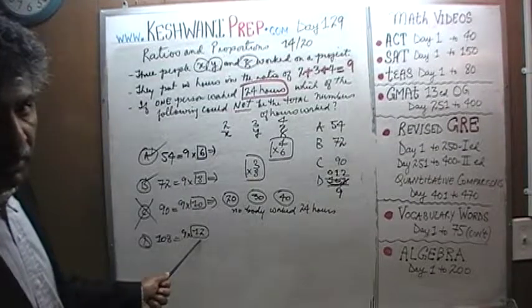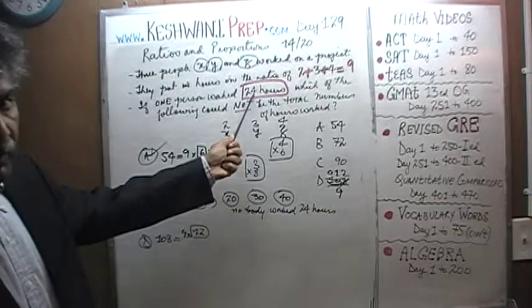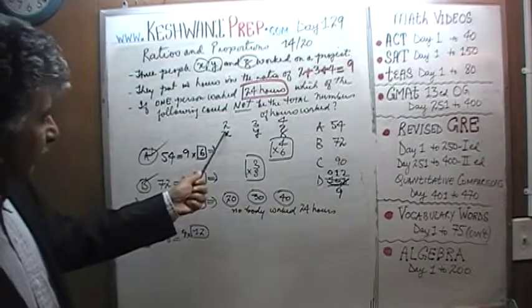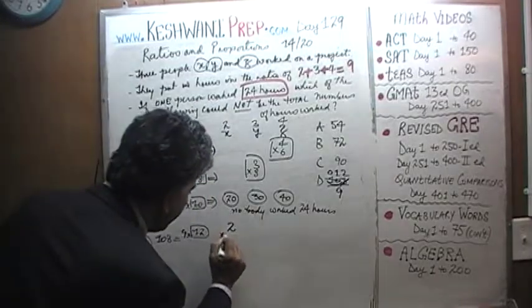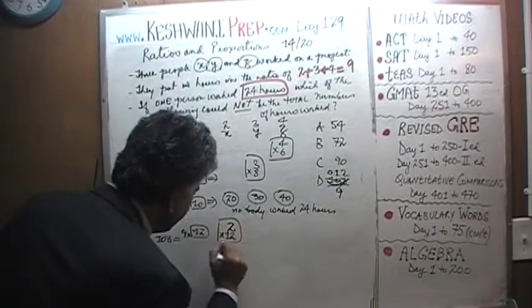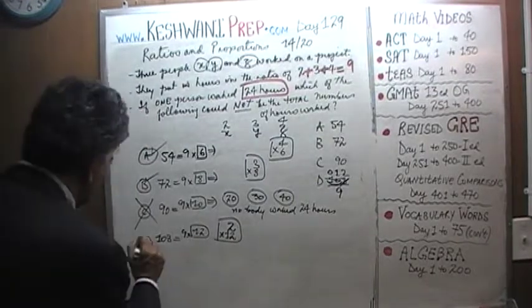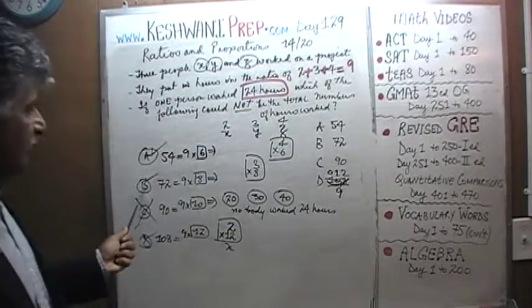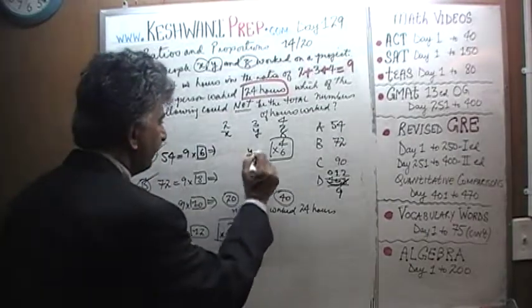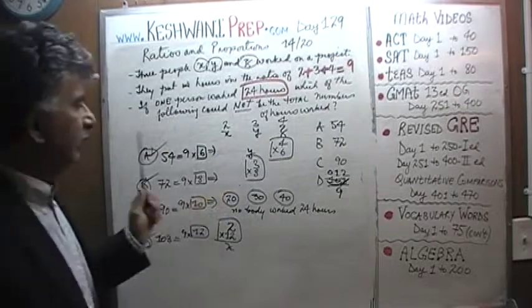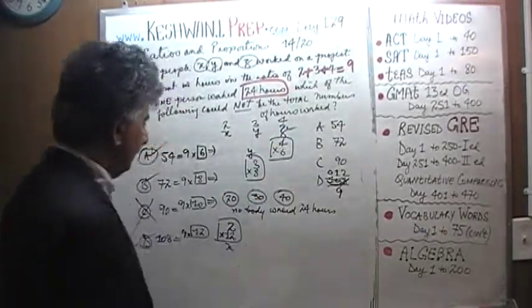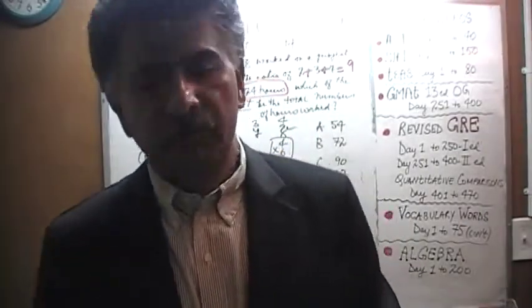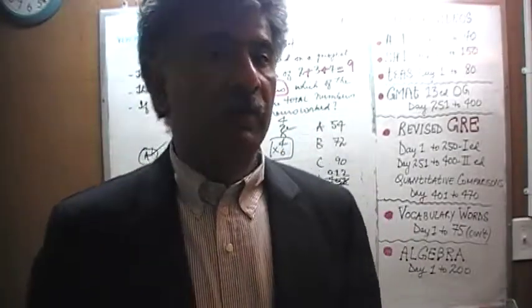Well, if each part is worked 12 hours and one person has worked 24 hours, we need a person who has 2 parts. 2 parts right here. Mr. X. X has worked 2 parts, and each part is 12 hours. Voila. So in answer choice D, it is X that has worked 24 hours. In answer choice B, it is Y that has worked 24 hours. In answer choice A, it is Z that has worked 24 hours. C is the only one that does not work, because nobody can work 24 hours if the total number of hours turns out to be 90.